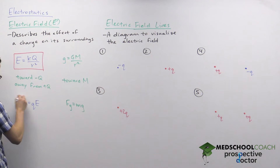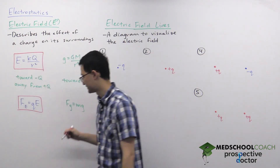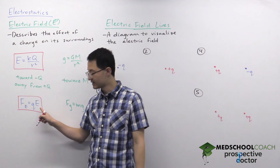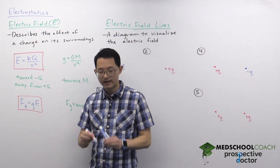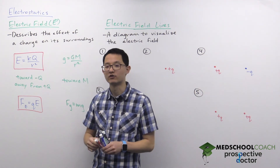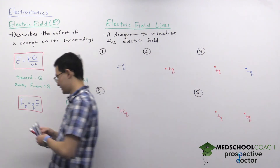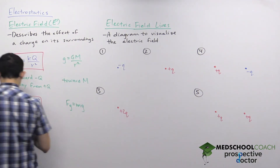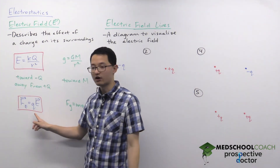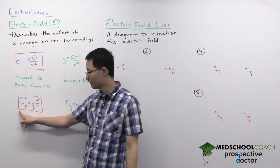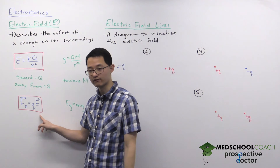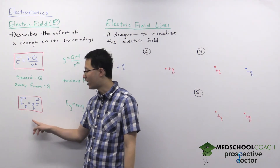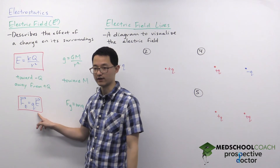This equation is very analogous to gravitational force. If you know what the electric field is, you multiply by the charge and that gives you the electric force. Note that electric force and electric field are vectors. So if the charge is positive, the electric force is in the same direction as the electric field, and if the charge is negative, the electric force is in the opposite direction of the electric field.